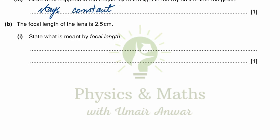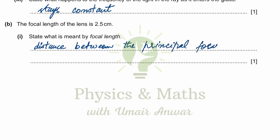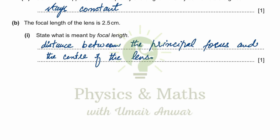The focal length of a lens is 2.5 centimeters. State what is meant by the focal length. It is the distance between the principal focus — or focal point — and the center of the lens, i.e., the optical center. The principal focus is found on either side of the lens, so the mutual distance between any one of the principal foci and the center of the lens is the focal length of the lens.